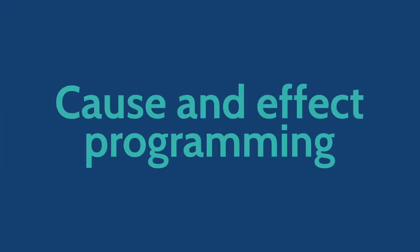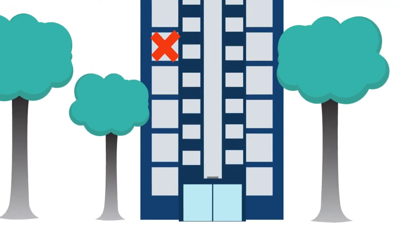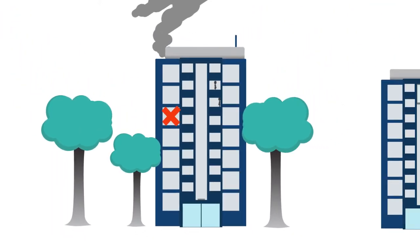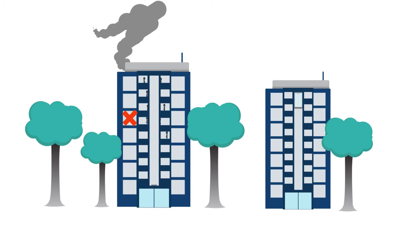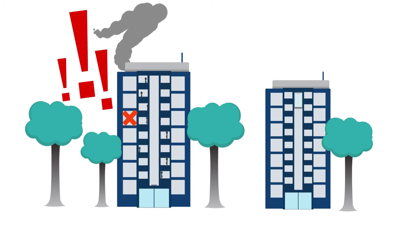Cause and effect programming enables the end user to decide what action they would like to take when an event occurs, such as when there are two office buildings side by side and if one building has a fire and is evacuated, the other building receives notification.